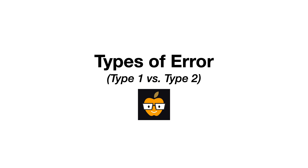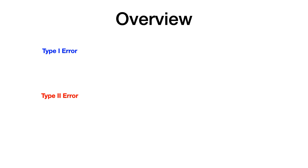I'm going to simplify everything that you need to know about the different types of error in hypothesis testing. In hypothesis testing there are two types of error: type 1 error and type 2 error, and I've color-coded them on the slide so that it's easier for your brain to digest all of this information.